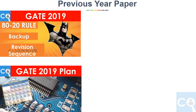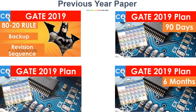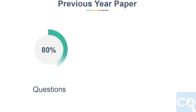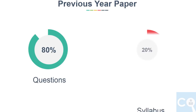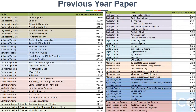If you have seen my old videos on the Batman plan for 1 year, 6 months, and 90 days, we derived all important topics using the 80-20 rule, which says 80% of questions come from 20% of the syllabus. For a conservative side, we adjusted this to: 70% of questions come from 30% of the syllabus. By analyzing last 27 years of previous year papers, we arrived at normalized marks out of 85 for each topic. You can refer to my old videos for how we did this analysis.